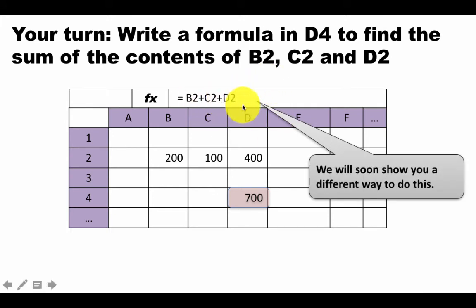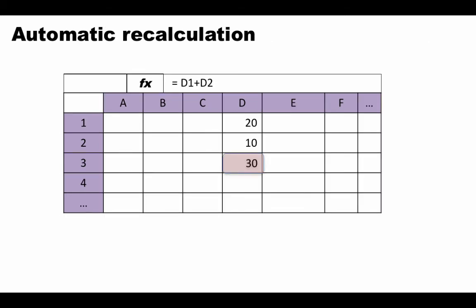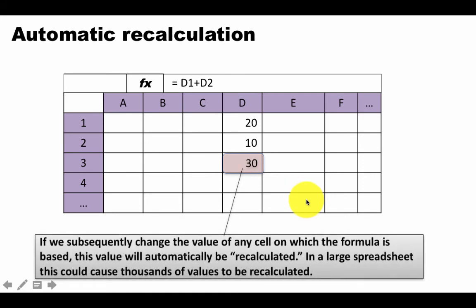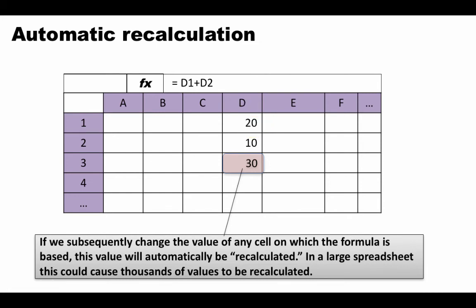You might wonder — if it's three values you can write B2+C2+D2, but what if it's ten values? Isn't it going to be tremendously tiresome to type a formula with so many addresses? Yes, that's true, and there are better ways to handle that which we'll show shortly. We've already talked about automatic recalculation. With '=D1+D2' giving 30, if you change D1 from 20 to 30, the result automatically becomes 40. Excel recalculates without you having to do anything.